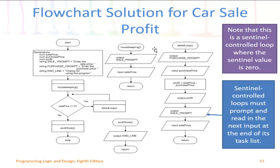The housekeeping module is the first one we'll look at. All that's really in there are two statements: the first one prompts the user to provide a sale price, and then that sale price is read in. This happens before the loop begins, and the reason we do that is we need a valid sale price so that we can compare it to zero.